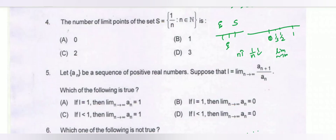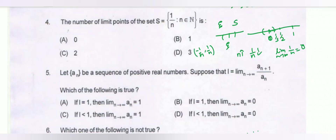When n tends to infinity, 1/n tends to 0. So if we take any neighborhood of 0, then we get at least one member of S. If we take the interval (−1/n, 1/n), we will get one element of S, that is 1/(n+1).